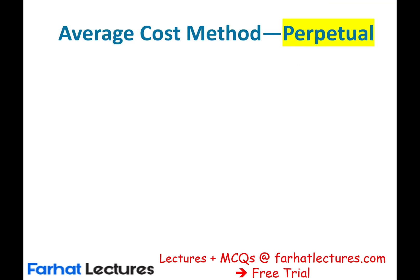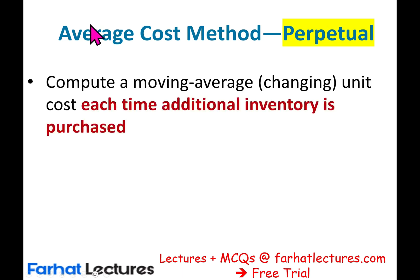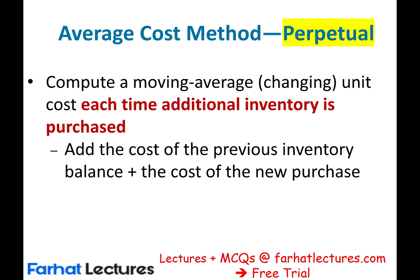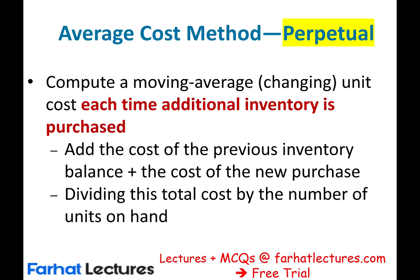How about using the average cost with the perpetual method? Under the perpetual method, we compute a moving average unit cost for each additional inventory purchase. That means your average cost will change with every additional purchase. We add the cost of the previous balance to the cost of the new purchase, then divide the total cost by the number of units on hand.